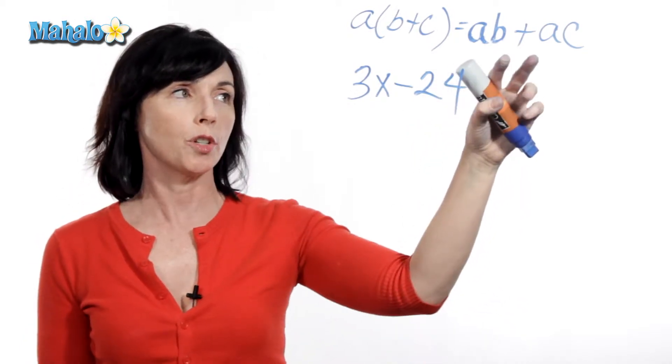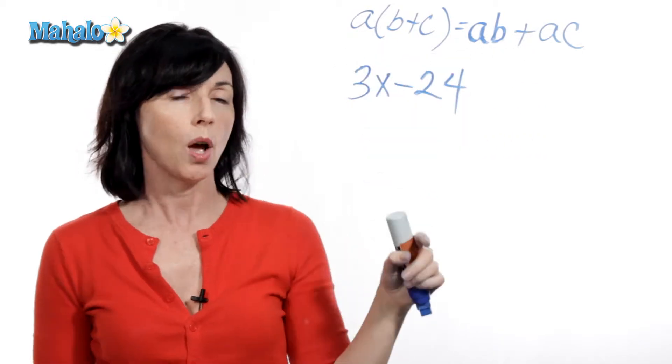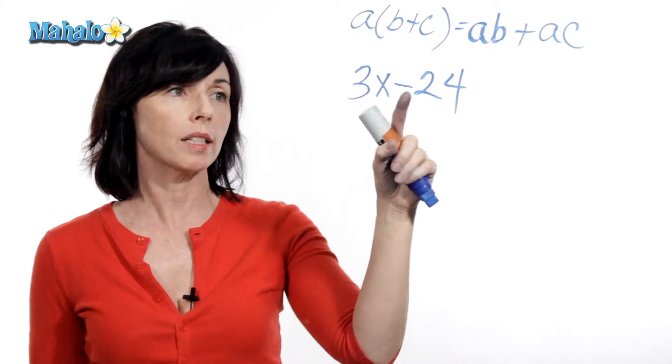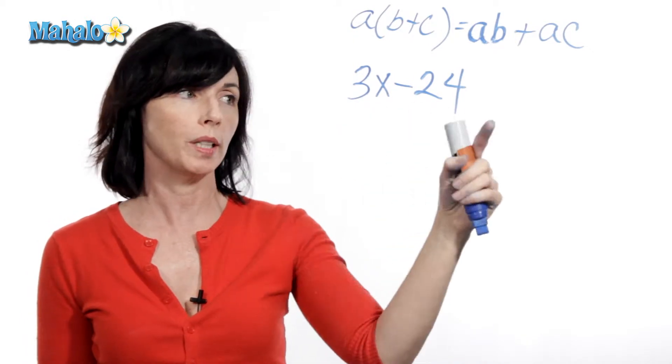Now, if I want to use the distributive property to make this look more like this, the first thing I have to do is look for a common factor, something that's common to both 3x and 24.